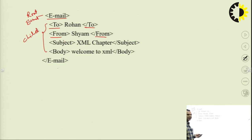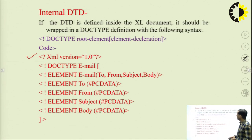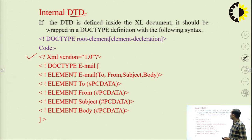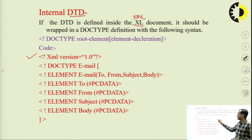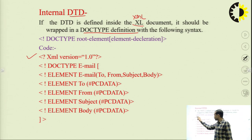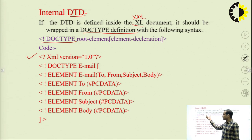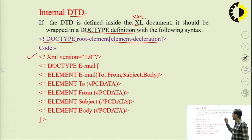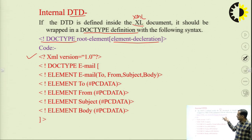For internal DTD, we define the list of legal building blocks inside the XML document. It should be wrapped in a DOCTYPE definition. The syntax is: an exclamation mark followed by DOCTYPE, then the root element name in brackets, followed by the element declarations, then closing bracket.